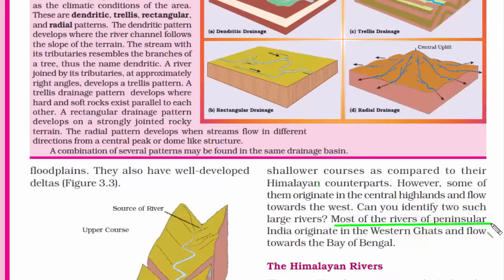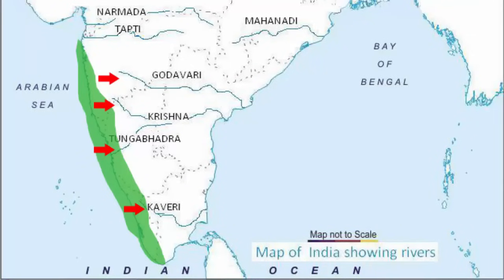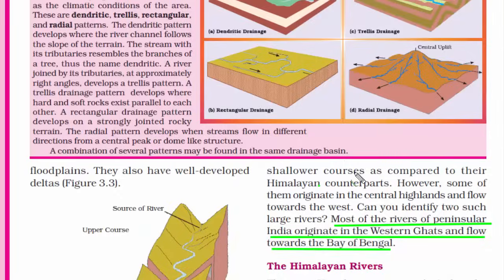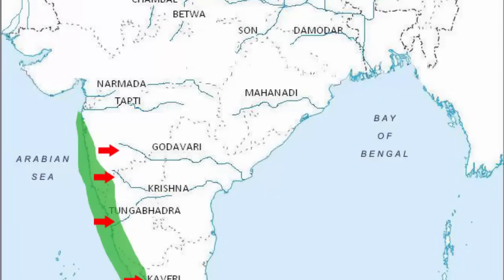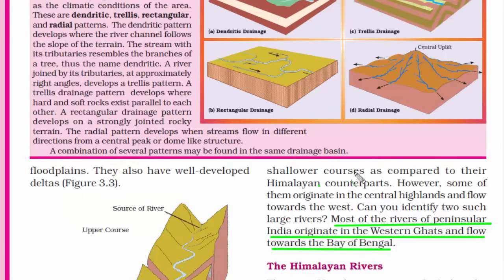Most of the rivers of the peninsula region originate in the Western Ghats and flow towards the Bay of Bengal in the east, because the Western Ghats are slightly higher in elevation. And remember, only Tapi and Narmada are the rivers that drain into the Arabian Sea to the west. All the rest drain into the Bay of Bengal.